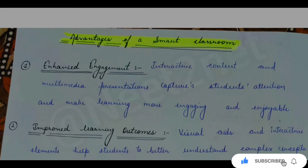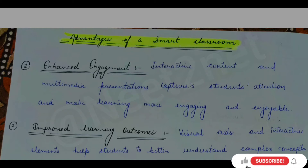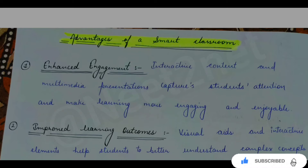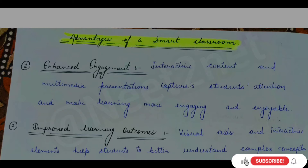Now let's talk about advantages of smart classrooms. First is enhanced engagement — when children study in an interesting way, the learning process becomes more engaging and enjoyable. When children study interactively through multimedia or presentations, they engage with curiosity. Children don't easily grasp abstract thinking; they need concrete things. When you show them visually, they look at it and areas of learning increase, so they have enhanced engagement.